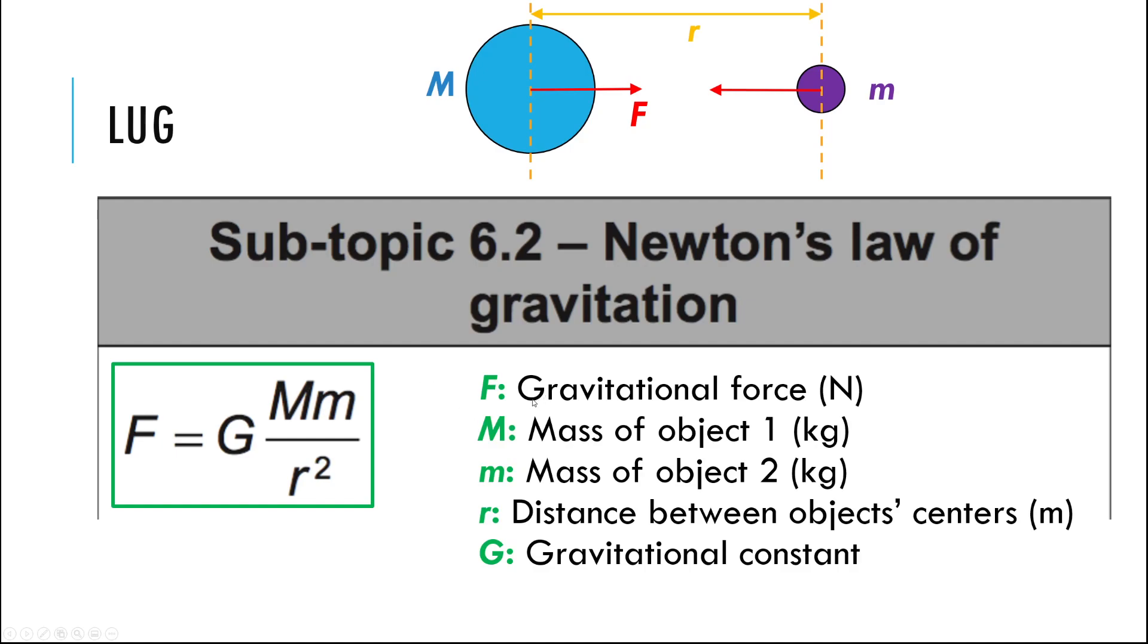All right, so this is right from your data booklet. In your data booklet, here's how they write it. F gives the gravitational force. Now, of course, there's two in two different directions. This will only give us the magnitude, the size of the force. We need to know it's an attractive force to figure out which way the force is on either object. And it turns out the force is equal to the product of the two masses multiplied together, divided by the distance between them squared, and also multiplied by this big G out front.